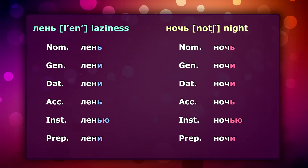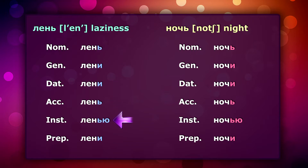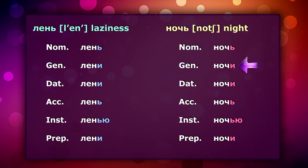Now let's decline these nouns. Лень (laziness): лень, лени, лени, лень, ленью, лени. And the second word, ночь (night): ночь, ночи, ночи, ночи, ночью, ночи. I hope that you have done everything correctly.